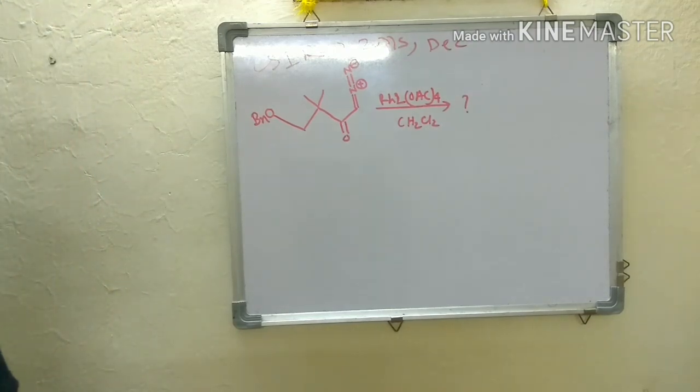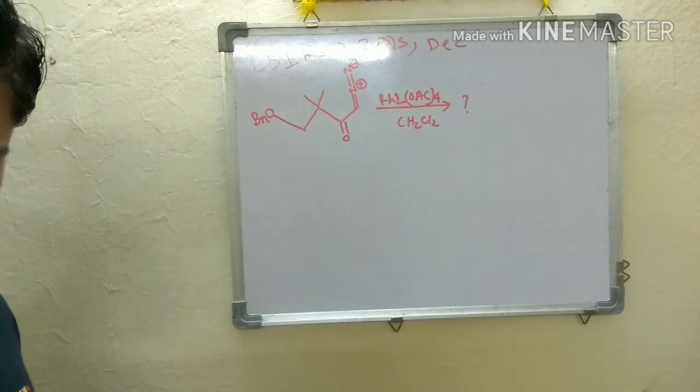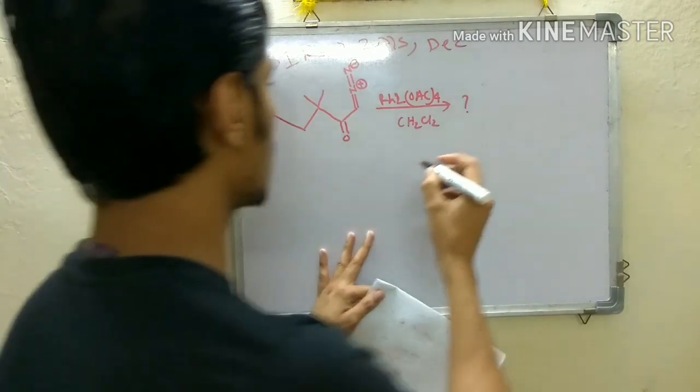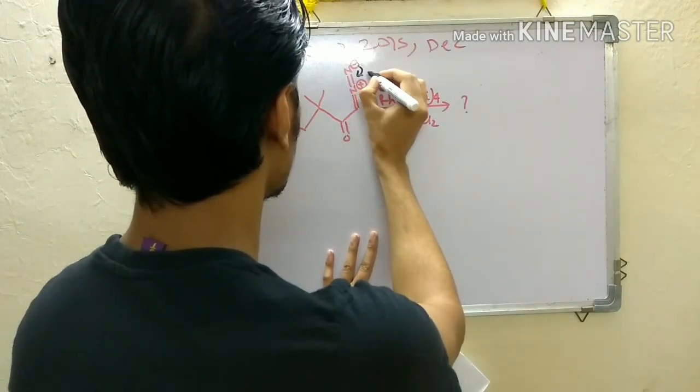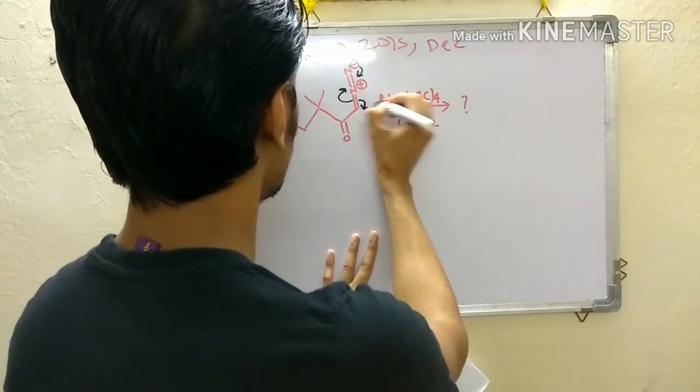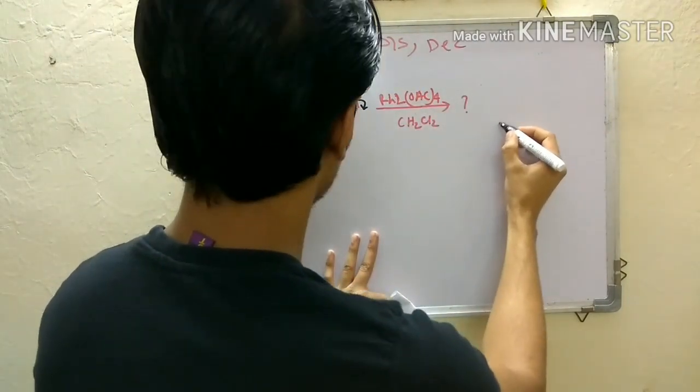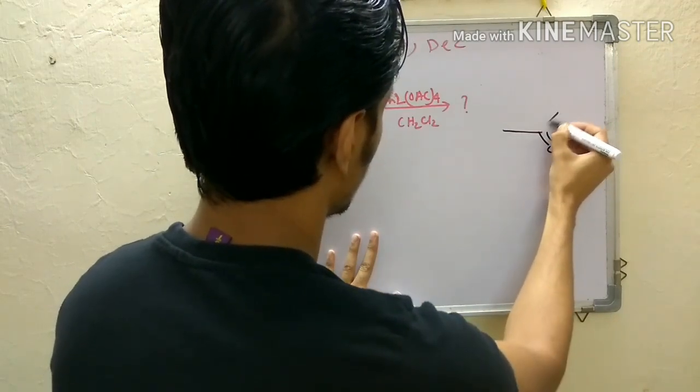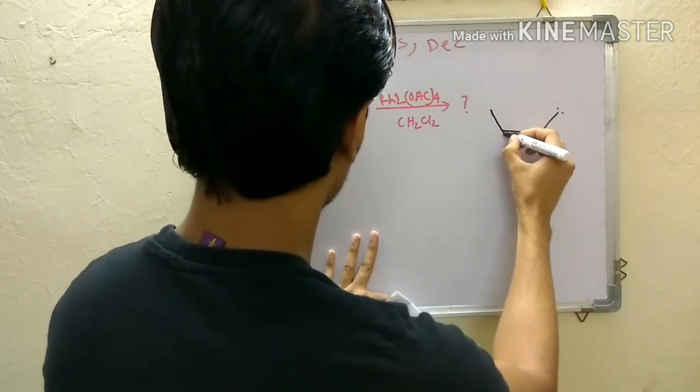They give different options and you have to predict which will be the product. So the first step will be similar to the question I have just discussed - that is this nitrogen will be eliminated and you will get this carbene.